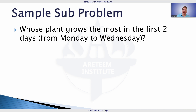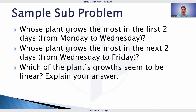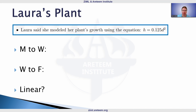Let's look at a sub-problem sample. The questions are: whose plant grows the most in the first two days, Monday to Wednesday? Whose plant grows the most in the next two days, Wednesday to Friday? And which of the plants' growths seem to be linear — explain your answer. I want to stress the importance of explaining the answer. Students need to explain what they mean by linear and how you can check for linearity, as there are different ways to approach it.